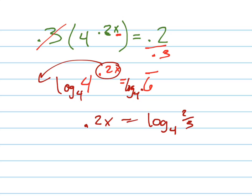Then you can do a couple things here. You can either split this up or just leave it and write it like log base 4 of 2 thirds divided by 0.2. Well, what's 0.2? 1 fifth. Yeah, 0.2 is 1 fifth.